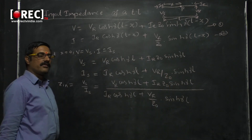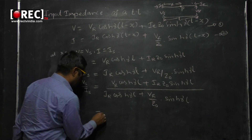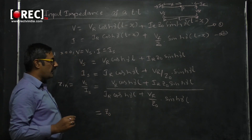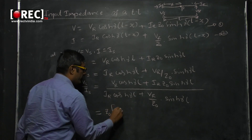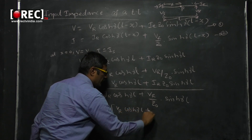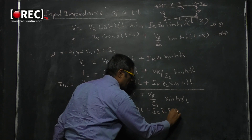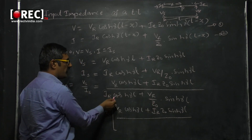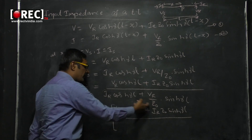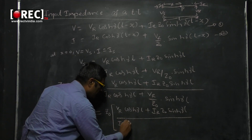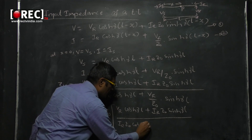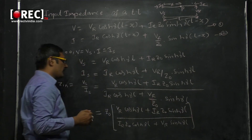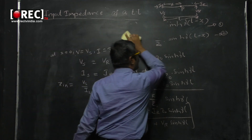Simplifying further, taking Z₀ as the LCM in the denominator: Z₀ multiplied by VR cosh(γl) plus IR·Z₀ sin h(γl) in the numerator, divided by IR·Z₀ cosh(γl) plus VR sinh(γl) in the denominator.